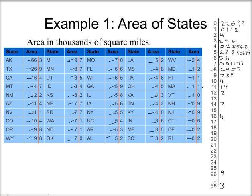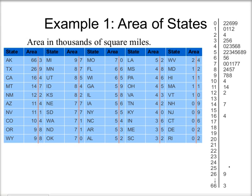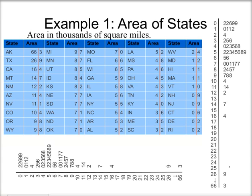Looking at this stem plot, I can see that most states are clustered between 0 and 12, and then I've got a few trailing off with 14 and 16. Then a couple of outliers, which would be Texas and Alaska, are the biggest states. Here it's redrawn a bit better, typed with the computer so you can see it better. You might notice that if you turn the stem plot on its side, it looks a lot like a histogram.